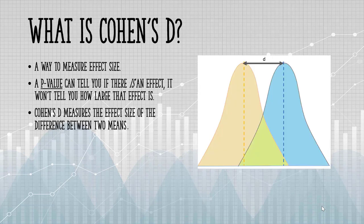Cohen's D measures the effect size between two means. If this is sample 1 and this is sample 2, Cohen's D gives you that measure of the difference in standard deviations.